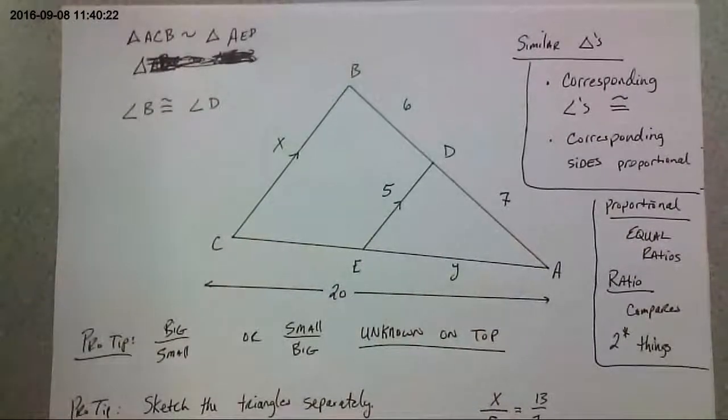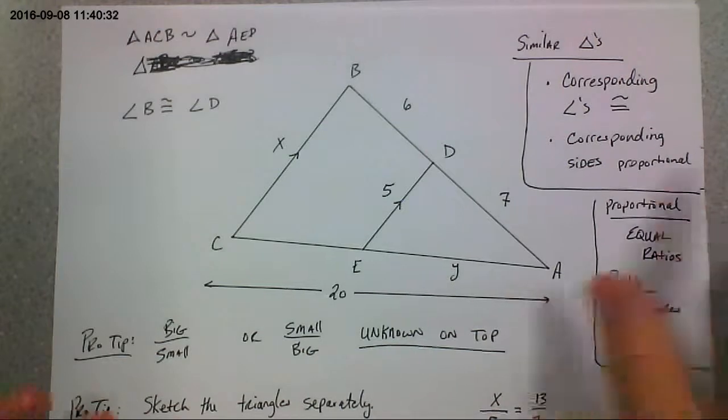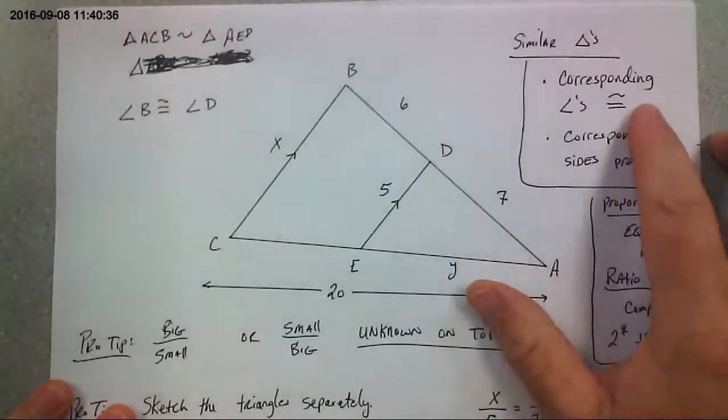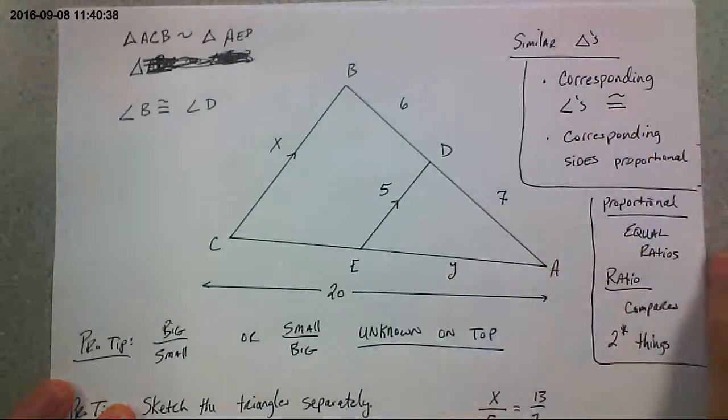We're going to be talking about similar triangles. Not so much in determining how they're similar, but using similarity and scale factor to find missing parts and pieces. So first of all, similar triangles. Corresponding angles are going to be congruent. That symbol means congruent. And corresponding sides are going to be proportional.